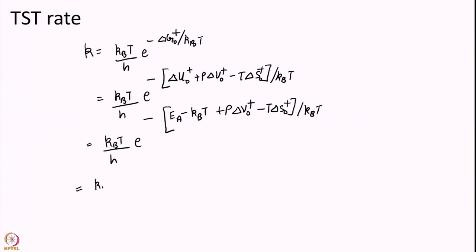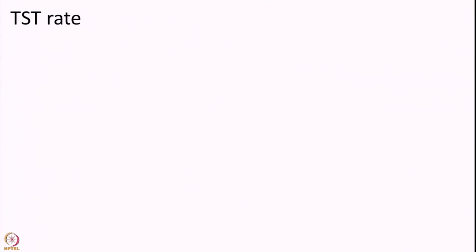So, I will just simplify this a little bit. I will write this term first. You see I have KT over KT that gives me 1, and minus into minus gives me plus 1. Then I will write e to the power of minus P delta V naught over KT, and then I will write e to the power of plus delta S naught over KB, and finally e to the power of minus EA over KB T.